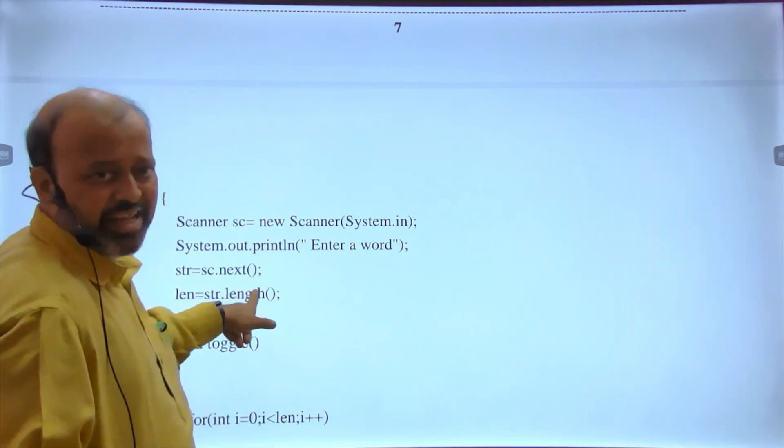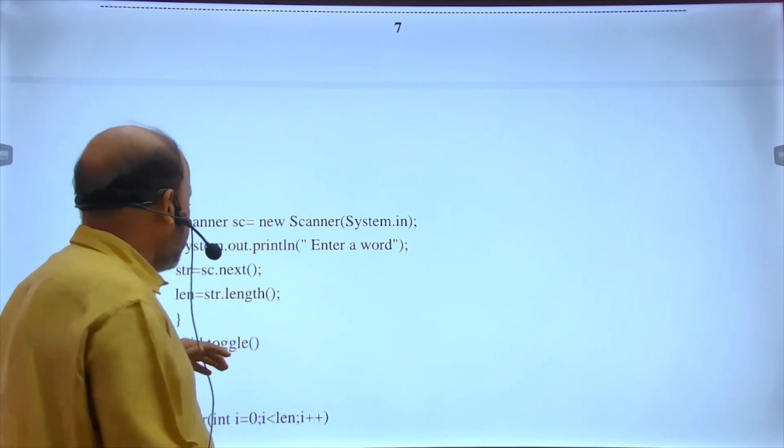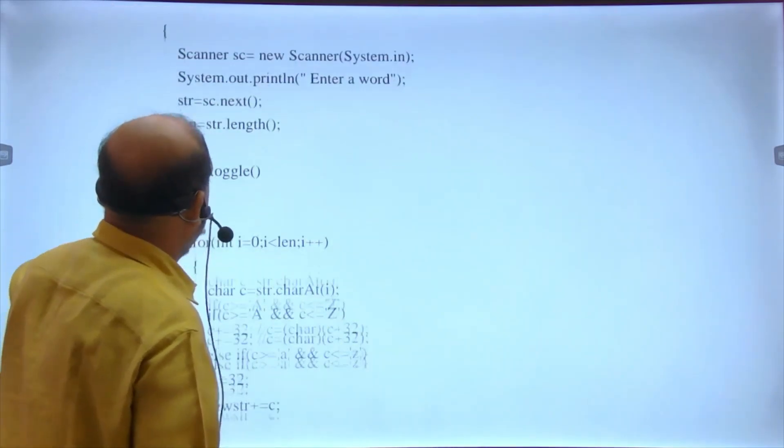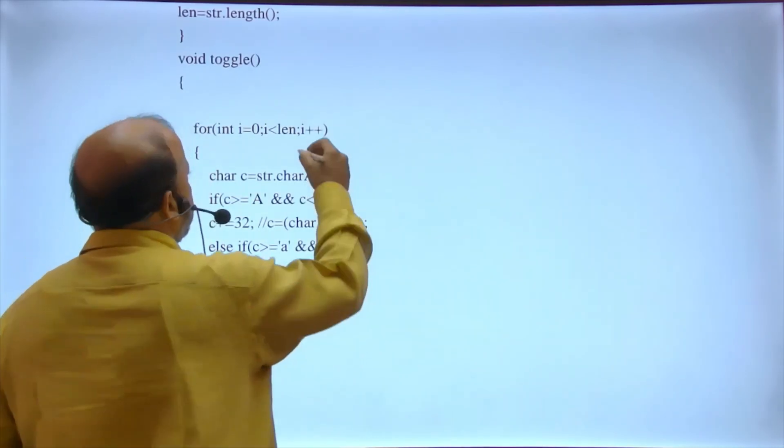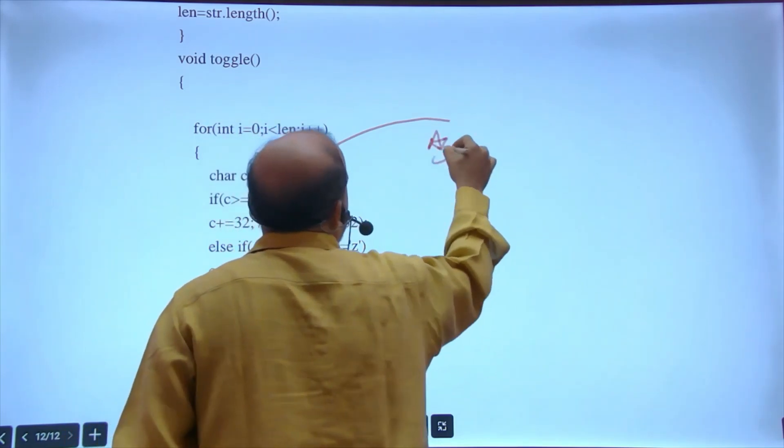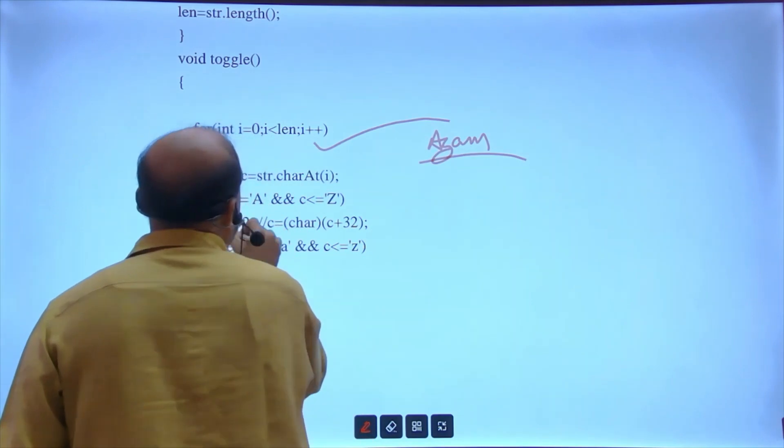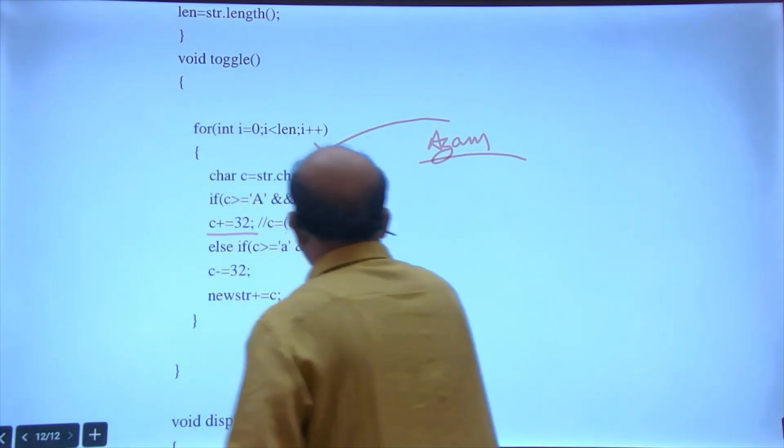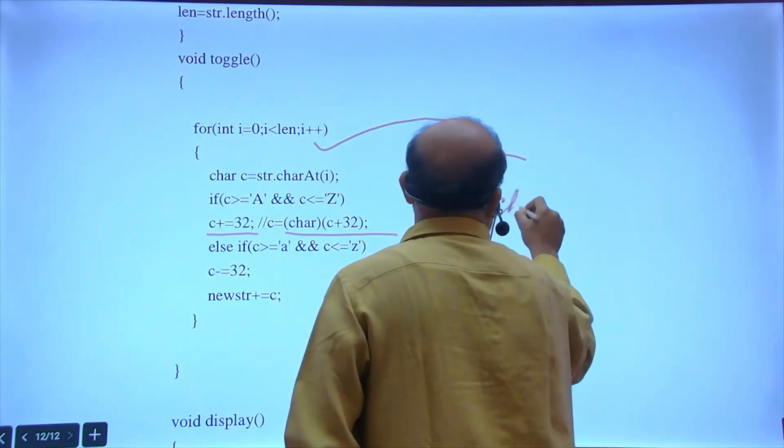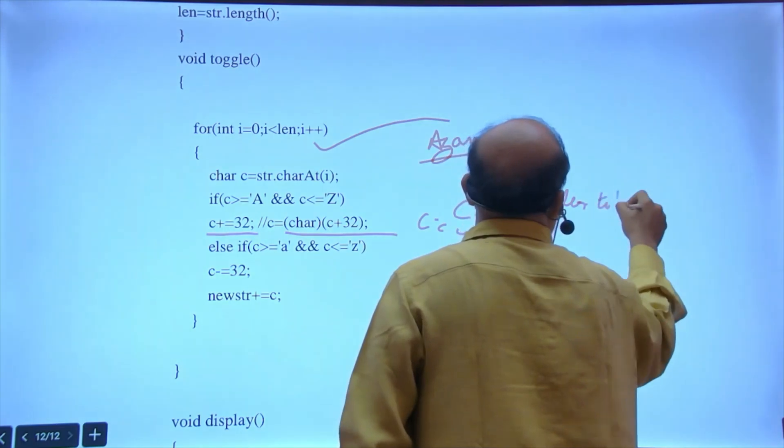They have removed that, that's why this time they're giving easy. But in ISC, not so easy programs come. Second one: toggle. Toggle means small will become capital, converts all uppercase to lower and lowercase to upper. Again come to the solution. This part: just follow the question - class name toggle, data member, constructor.